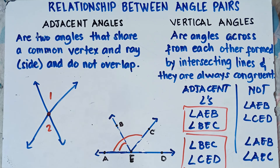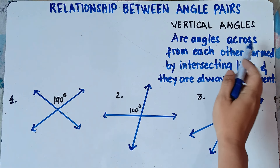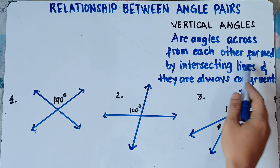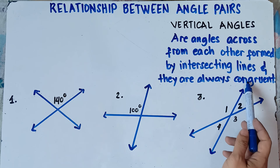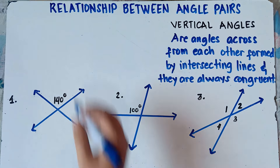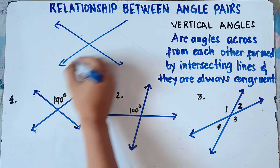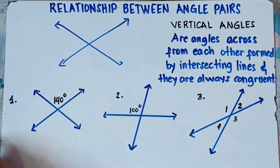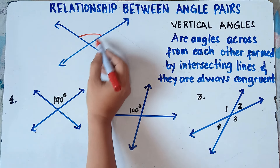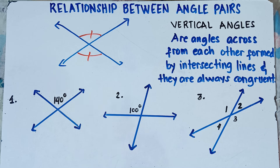Let's focus now on vertical angles. Now let's talk about vertical angles. What are vertical angles? Vertical angles are angles across from each other, formed by intersecting lines, and they're always congruent. If we have two lines intersecting each other, we can form angles, and this angle right here is congruent to the opposite angle — this is what we call vertical angles.